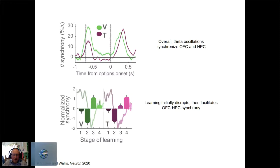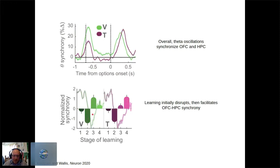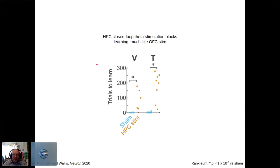OFC-hippocampal theta synchrony (shown as percent change from baseline) shows a strong uptick during fixation and choice. Importantly, synchronization is modulated by learning: there is a desynchronization when learning initially starts and performance dips as new stimulus-outcome associations begin to be established, followed by a large over-expression of synchronization later in learning.